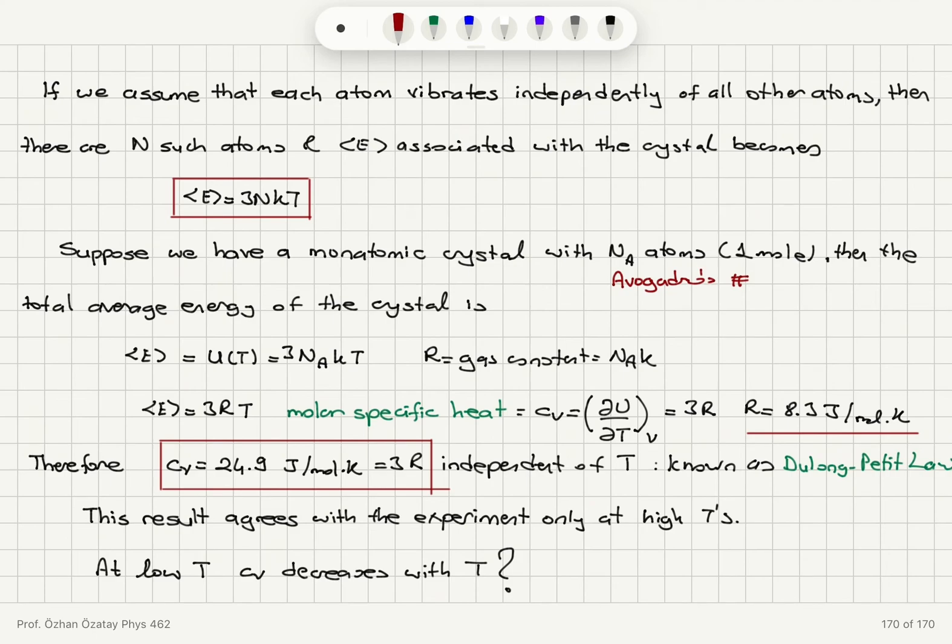That is basically defined as the derivative of the average energy with respect to temperature. That gives us a numerical value, 24.9 joules per mole Kelvin. Most importantly, it is independent of temperature. This is known as Dulong-Petit Law. This result agrees with experiment only at high temperatures. Whereas for low temperatures, we see that the molar specific heat decreases with temperature. We will talk about two different models, Einstein model and Debye model to account for it. But in the classical limit, when we have all modes excited at a very high temperature, we will have the molar specific heat given as 3R independent of temperature.